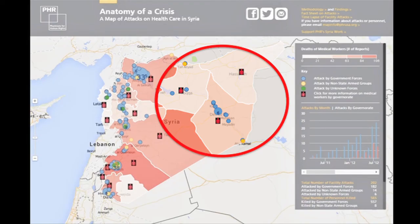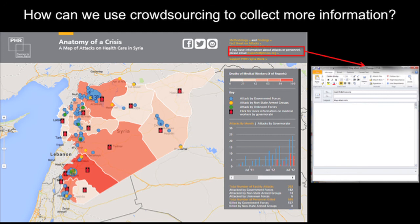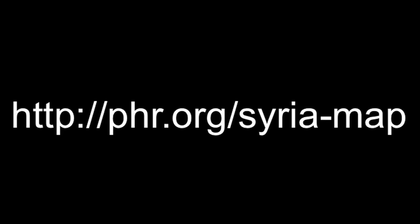The last issue is lack of information. In Eastern Syria, especially after ISIS took over, it's been really hard to get accurate information. We tried putting an email address at the top of our map so anyone could send us information about medical facility or personnel attacks, but that hasn't given us anything. We want to know how we can use crowdsourcing to collect more information while keeping our methodology and corroboration level very high — so it's not just a crowdsource map.